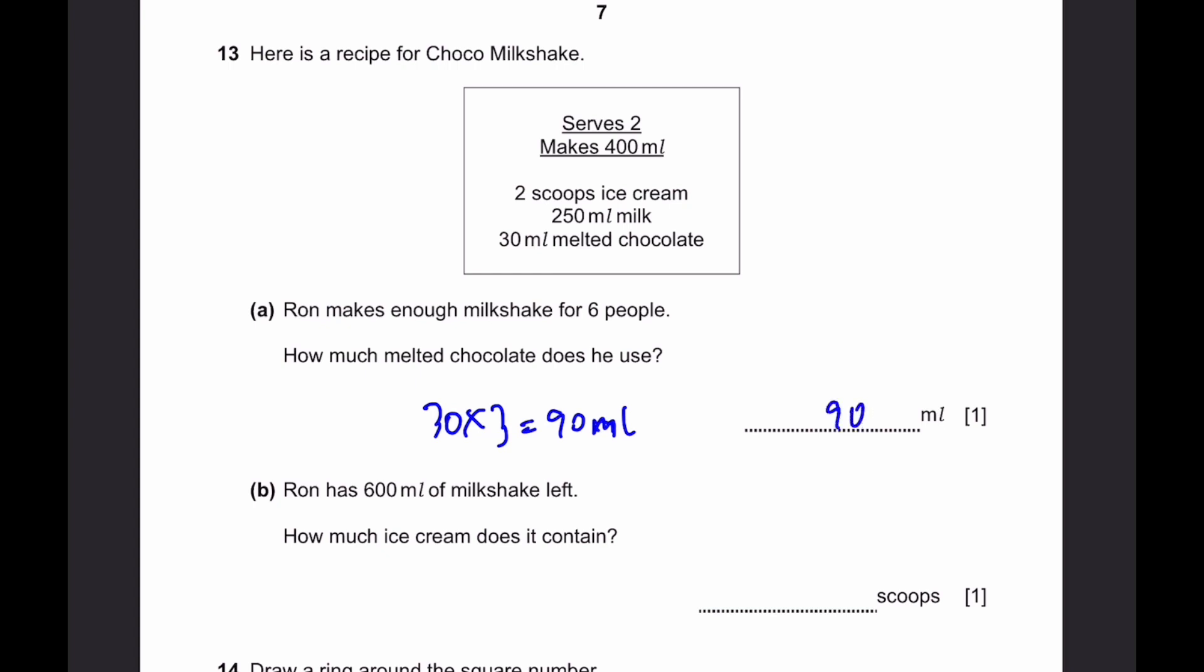B. Ron has 600 milliliters of milkshake left. How much ice cream does it contain? 400 milliliters has 2 scoops of ice cream. So 200 milliliters is 1 scoop. And that means multiply both sides by 3. 600 milliliters equals 3 scoops. So the answer is 3.